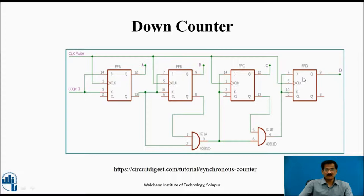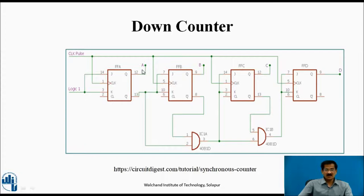Initially, when all flip-flops are reset to 0, 0, 0, at the arrival of the first clock pulse — since the first flip-flop is connected to logic 1 — A will toggle to state 1, and since QA bar was earlier 1, B, C, and D will also become 1. So the initial count will be 1, 1, 1, 1 at the first clock pulse. In the second clock pulse, A will toggle to 0 while B, C, D remain 1, 1, 1 — count becomes 1, 1, 1, 0. In a similar manner, it will count down towards 0, 0, 0, 0. The only difference in the down counter is that we use inverted outputs QA bar, QB bar, QC bar, and QD bar.